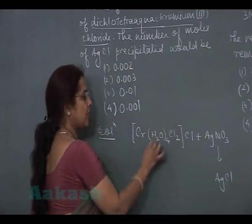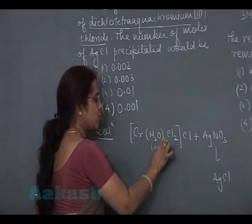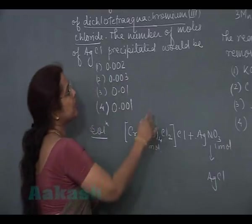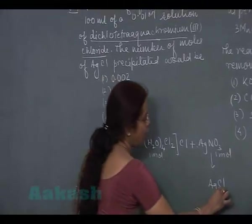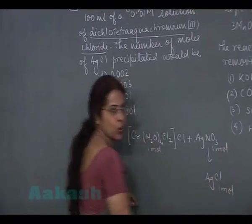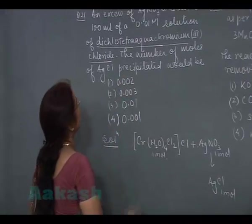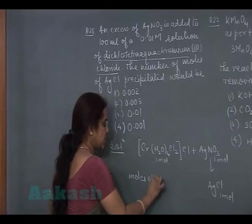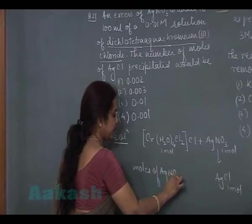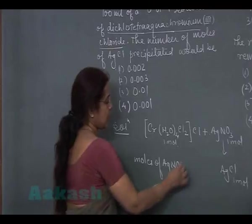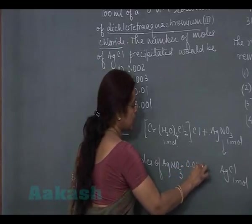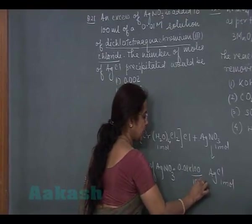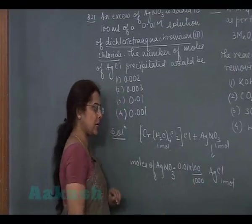Now if this complex is treated with AgNO3, only this chloride ion will be precipitated as AgCl. So if the given complex is 1 mole and AgNO3 added is 1 mole, then precipitate of AgCl obtained will be 1 mole. Now in this question the given quantity, it means moles of AgNO3 given is molarity 0.01, volume is given 100 milliliter which is equal to 0.1 liter.